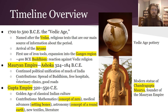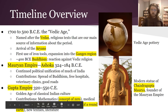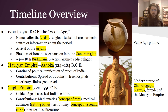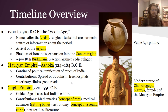The Mauryan Empire is also in the time period we're studying. It was founded by Chandragupta Maurya — you can see a modern-day statue here — but his grandson Ashoka is probably the more famous of its rulers. It was one of the first examples of the political unification of most of India, and it spread Buddhism, set up free hospitals, veterinary clinics, and good roads.